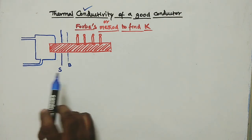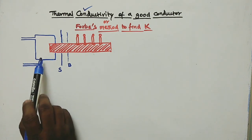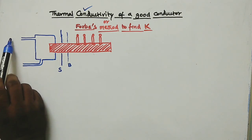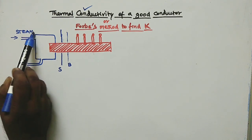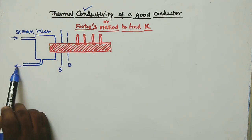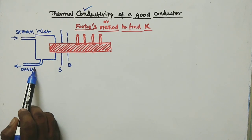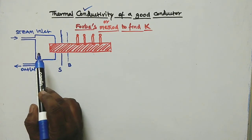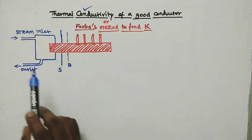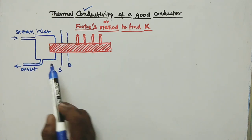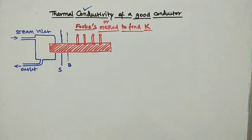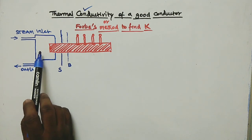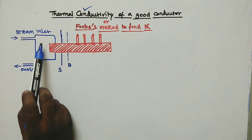This is our experimental setup. This is the steam container connected with a boiler. This hole is the steam inlet, and this is the outlet. A rod is connected with this steam container as shown in the figure. S is a cardboard to avoid radiation from the steam container, because heat is supplied to this rod only by the steam inlet.